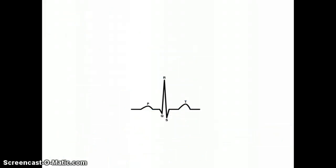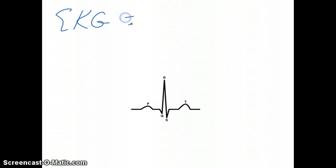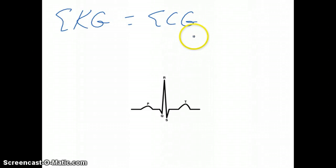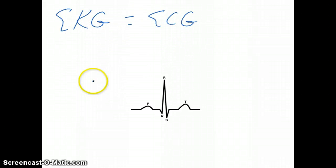The electricity created by the heart can be detected by electrodes — that's the job of an EKG machine, or ECG. EKG and ECG are the same thing: electrocardiogram. Some countries spell cardiogram with a K, which is where the term EKG comes from, but ECG and EKG refer to the same thing.